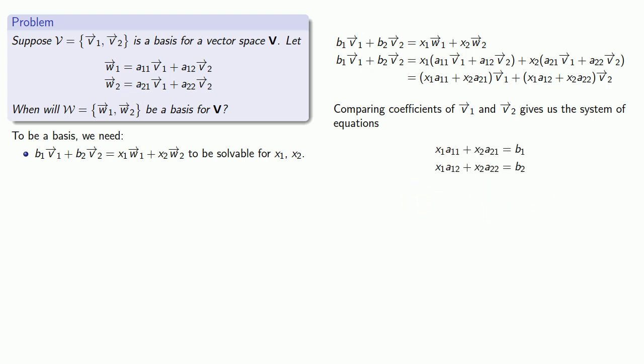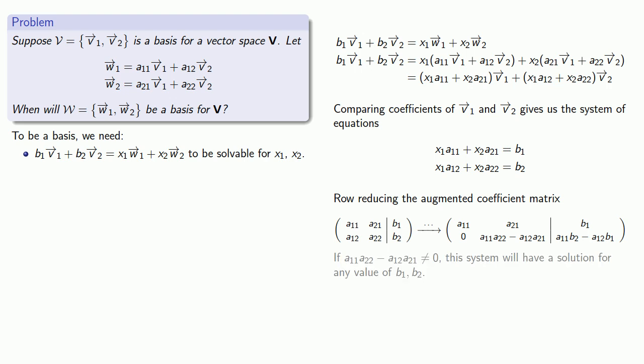We can then row reduce the augmented coefficient matrix. Remember, our goal is to try and find solutions for X1 and X2. And we see that if A11A22 minus A12A21 is not equal to 0, this system will have a solution for any values of B1 and B2.